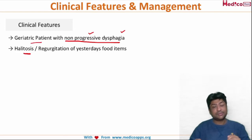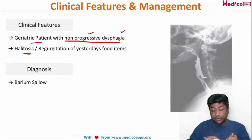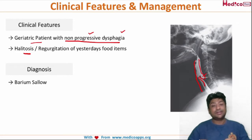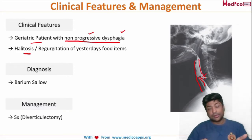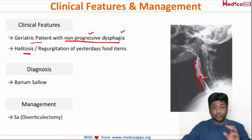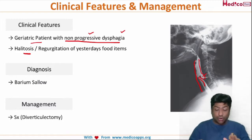Diagnosis is relatively simple — you go for a barium swallow and you can easily identify the diverticulum. This is your Zenker's diverticulum. Management is surgical, where you go for a diverticulectomy — you cut out the diverticulum. That is all about Zenker's diverticulum; obviously a little more can be learned from surgery or pathology, but from the medicine point of view that is what is most important.